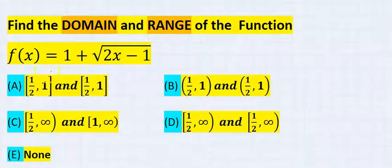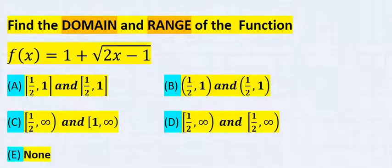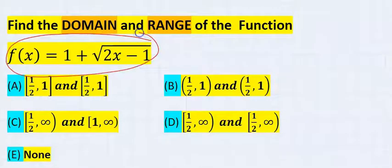In the options, for each domain, there is a corresponding range. That is exactly how it's represented in the options. Just as you see, domain and range. Now, let's solve this function.